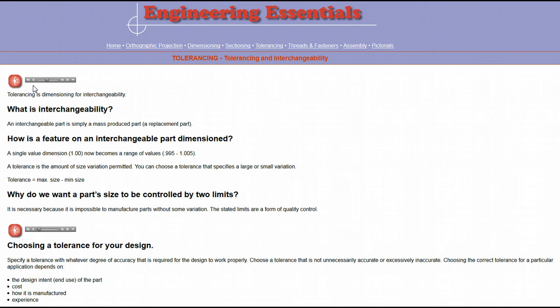There would be no interchangeability without tolerancing. Tolerancing is a technique that replaces a single value dimension with a size range. Tolerancing allows a feature's size to vary by a specified amount. It is necessary to specify a size range because it is impossible to manufacture any part to an exact size. The size variation also gives us a method of quality control.